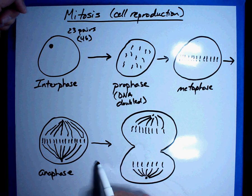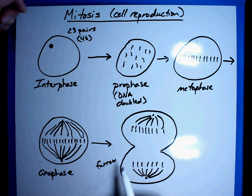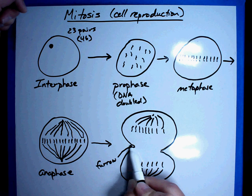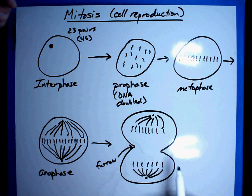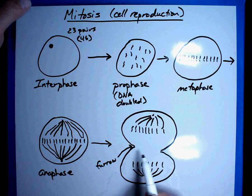That right there is called, sometimes they like this word, is called a furrow. It's a breaking, it's a wrinkling of the cytoplasm. And now it's starting to pinch off. You can see that you have now two separate cells.